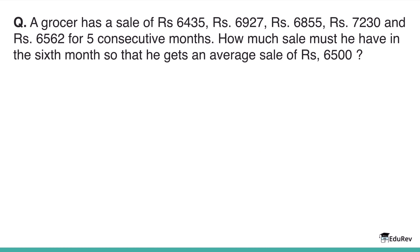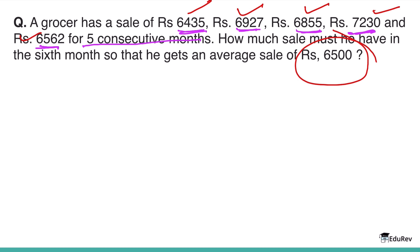Let's apply this concept. A grocer has sales of ₹6,435; ₹6,927; ₹6,855; ₹7,230; and ₹6,562 for 5 consecutive months (January through May). How much must he sell in the 6th month to achieve an average sale of ₹6,500? We know the average, so we can find the 6th month's sale.